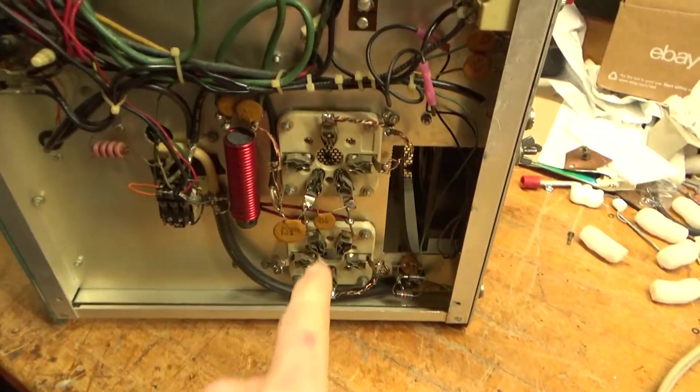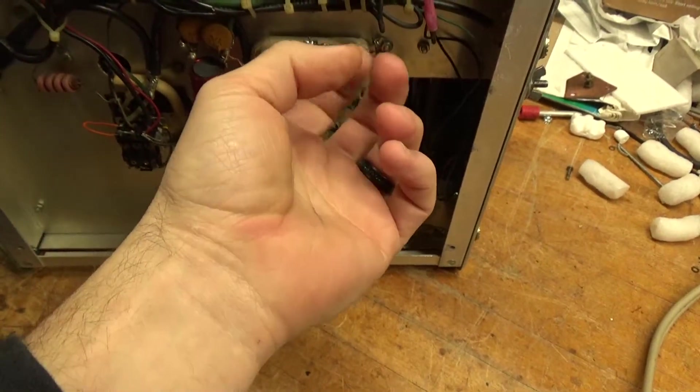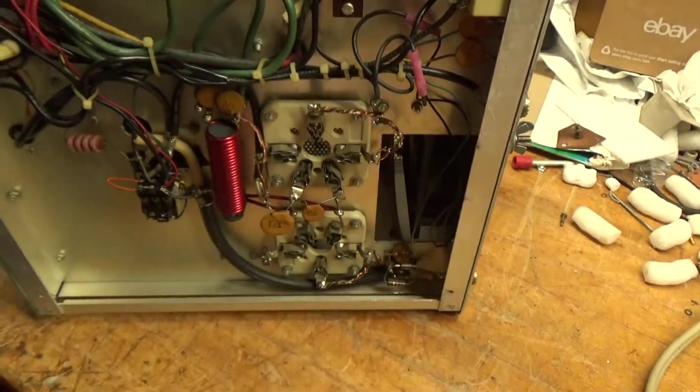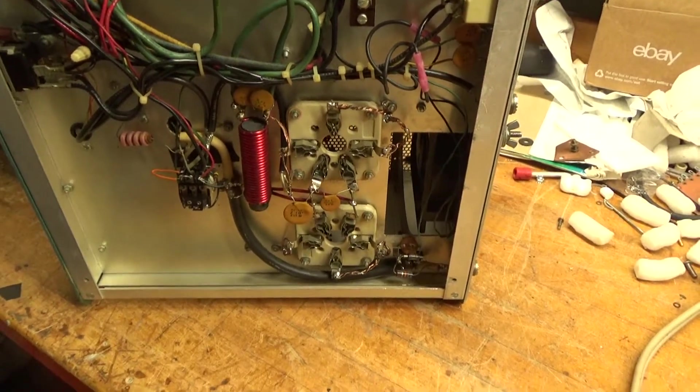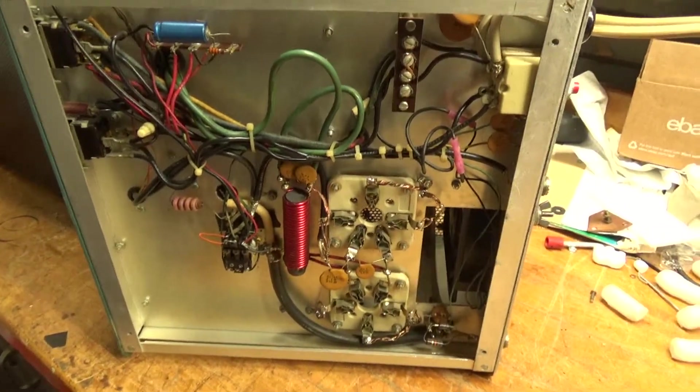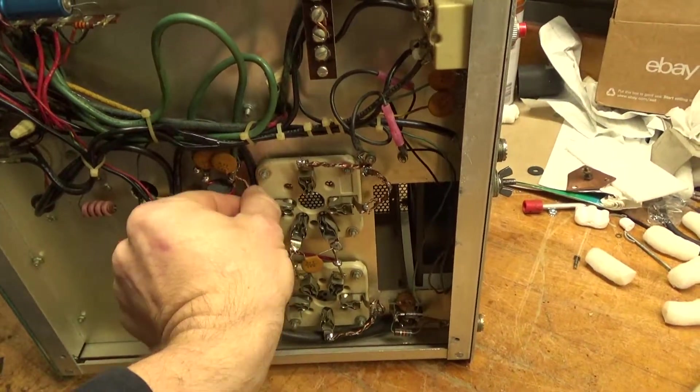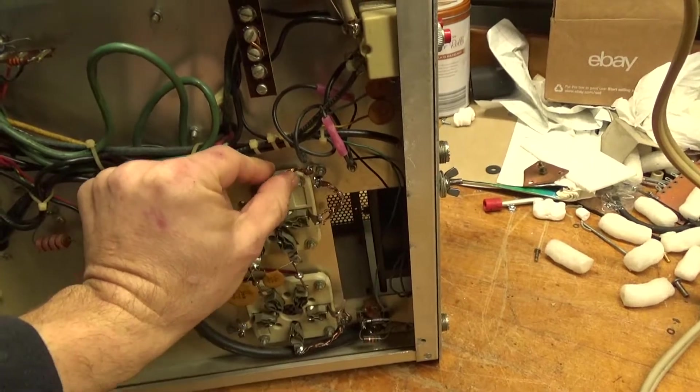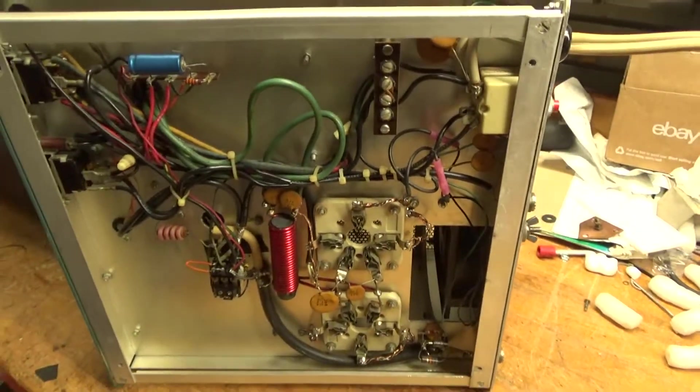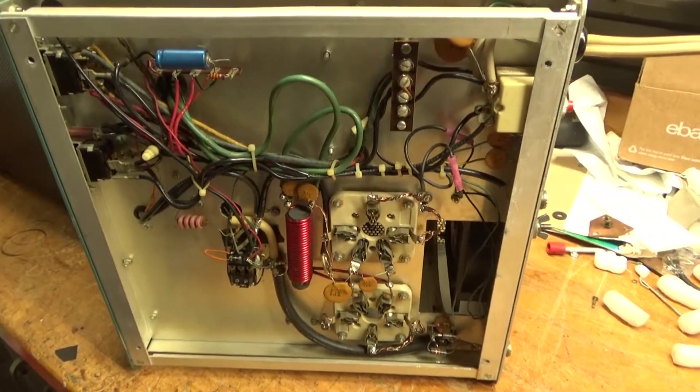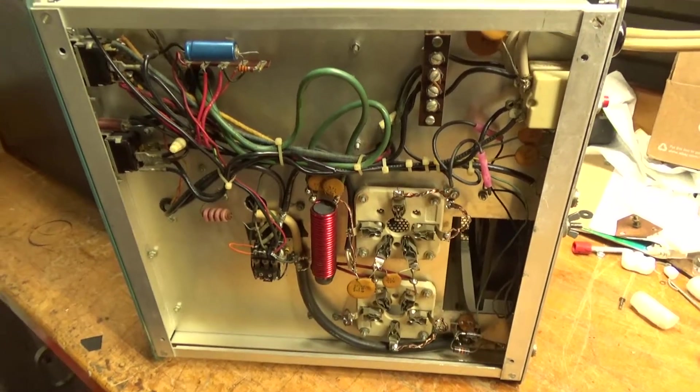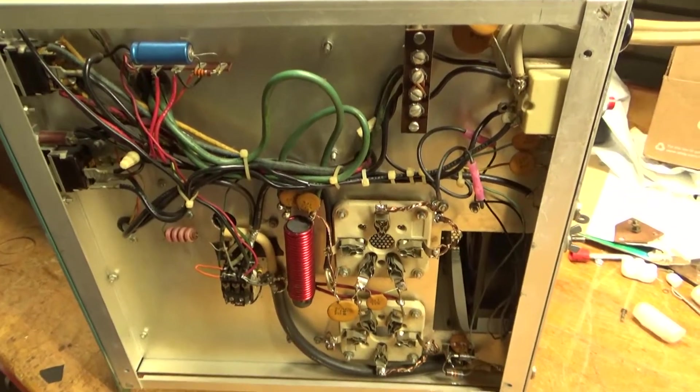It looks like someone grounded the grids, they did a... that has to be redone. They used wire, it should be strap, or at least shorter wire, not so long. You want the lead length as short as possible to keep the inductance as low as possible between the grids and ground.